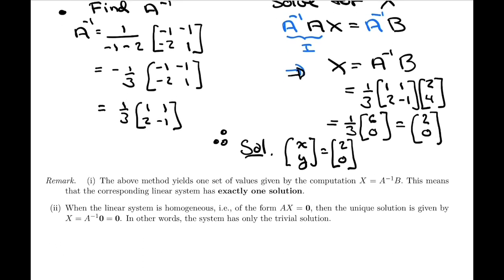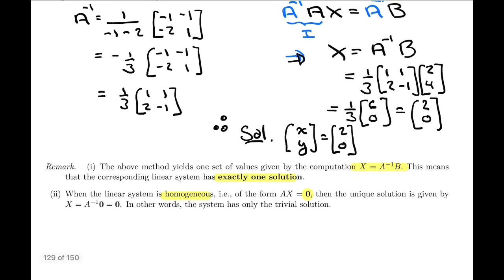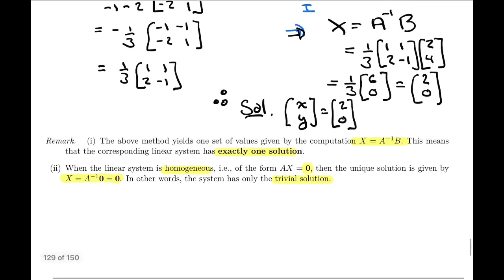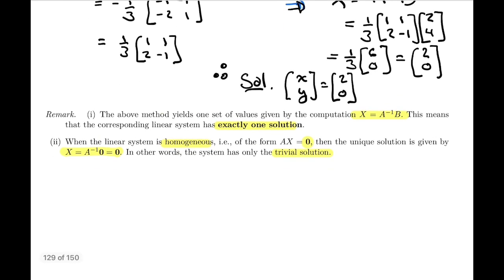Just a couple of remarks. You notice that in the above method, we use x equals A inverse times B to find the solution. This means the system has exactly one solution. Whenever we're able to use this method of using A inverse to solve the linear system, we're going to end up with one solution. In particular, when the system is homogeneous, which means the matrix of constants B is the zero matrix, then what is that unique solution? It's A inverse times the zero matrix, which will be the zero matrix. That is what we call the trivial solution.